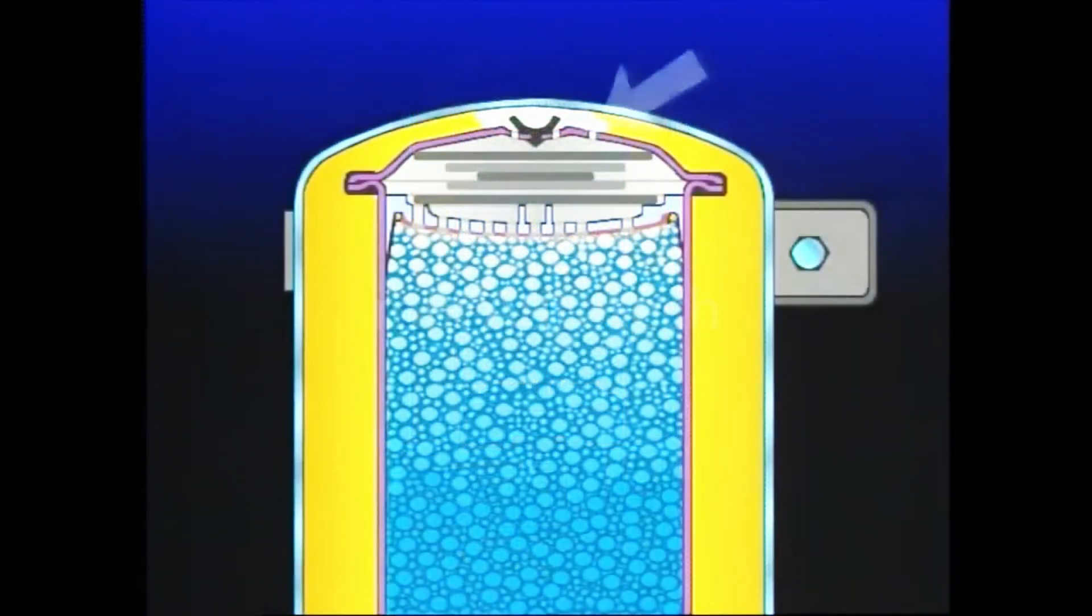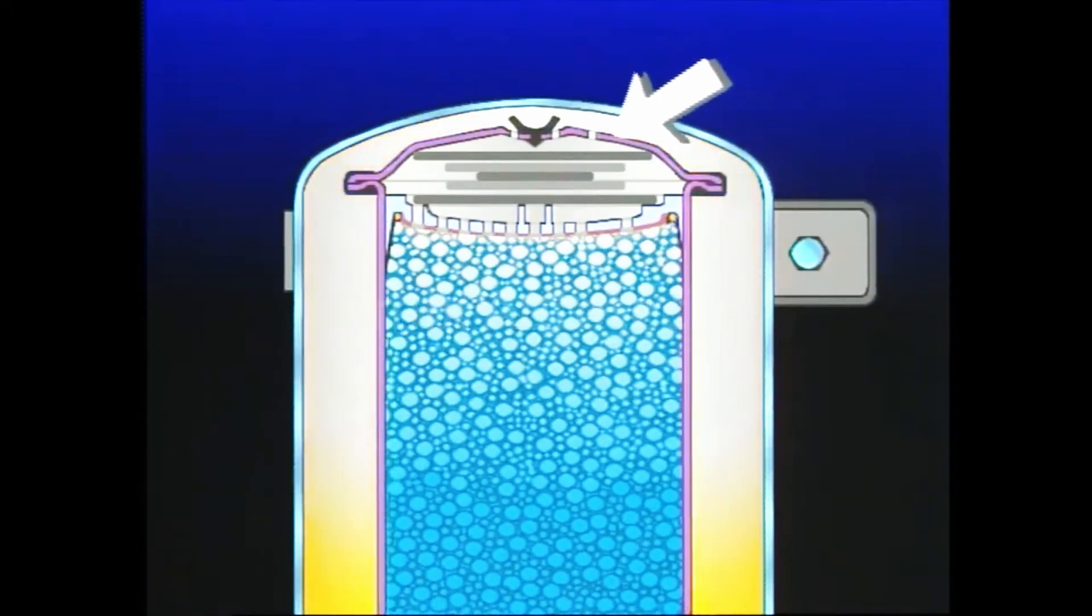While some air will flow through the orifice adjacent to the check valve, the majority of the dry air exits the desiccant cartridge through its integral check valve to fill the purge volume between the desiccant cartridge and outer shell.